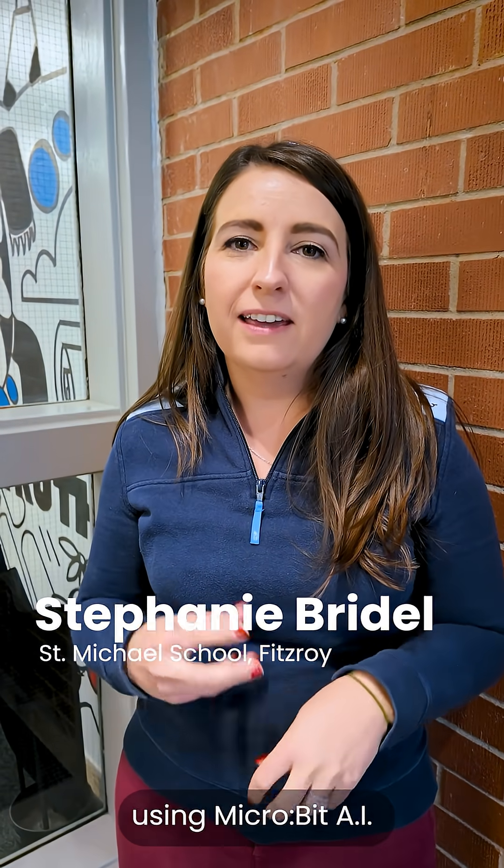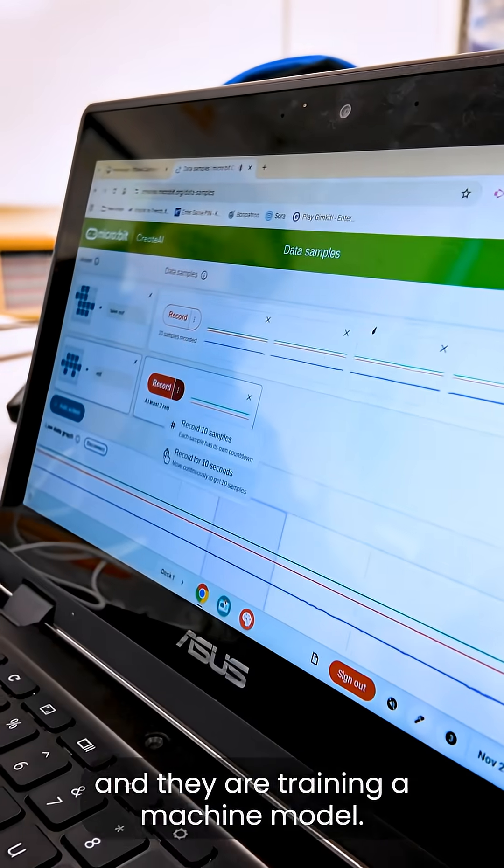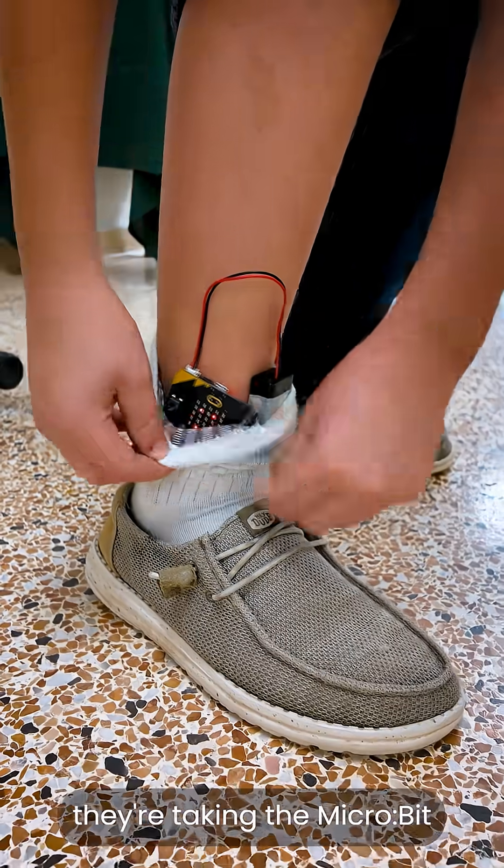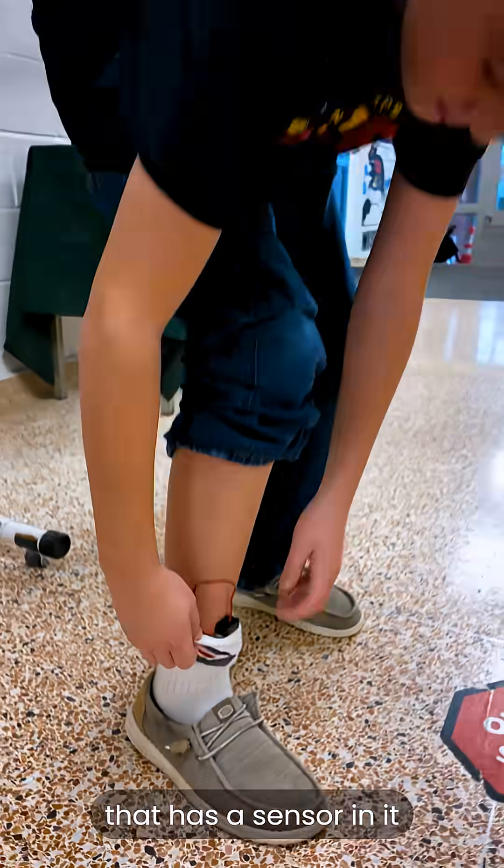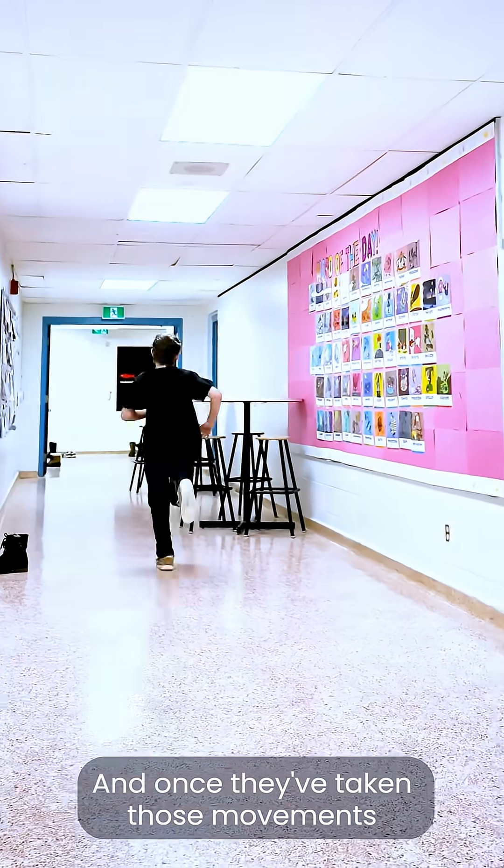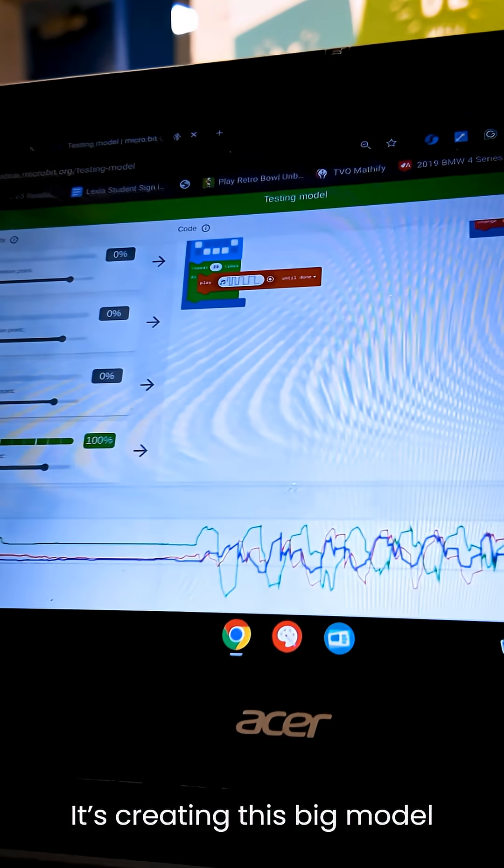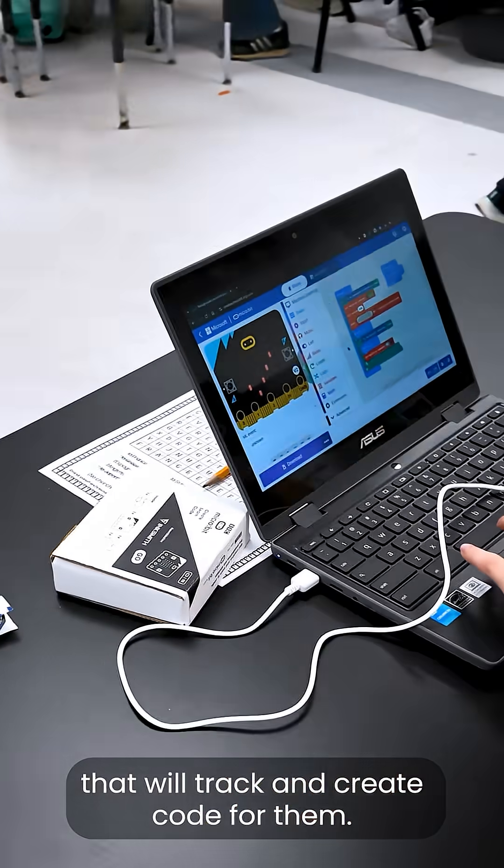Today my students are using Micro:bit AI and they are training a machine model. What that entails is they're taking the Micro:bit that has a sensor in it and they're teaching it different movements. Once they've taken those movements and trained the Micro:bit to do that, it's creating this big model that will track and create code for them.